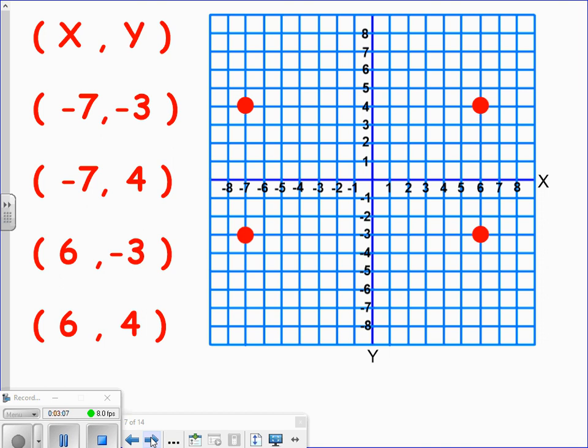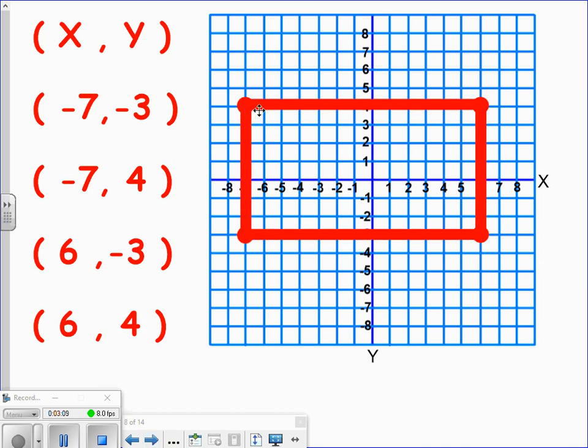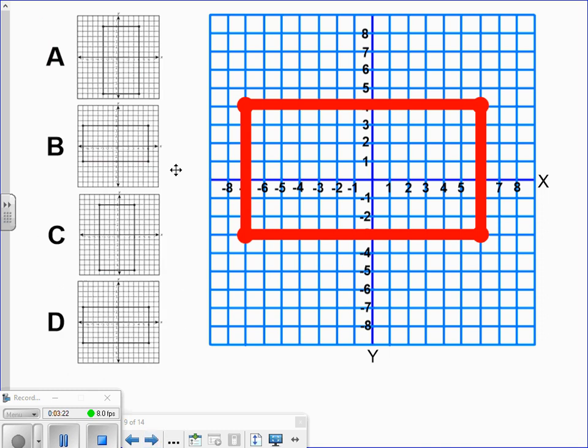So there are our four vertices and we can draw a polygon that looks like this. Now let's take a look at the choices for this guided instruction problem. We have A, B, C, and D.